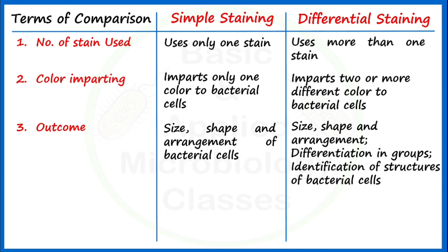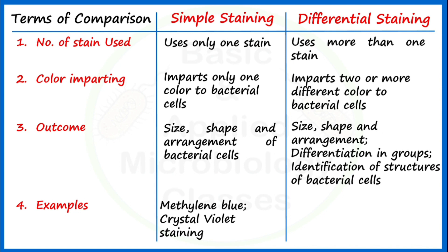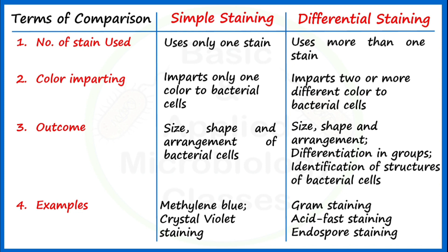Looking at examples: for simple staining, methylene blue and crystal violet-based staining are very good examples routinely performed in microbiology laboratories. For differential staining, gram staining and acid fast staining are prominent examples. Gram staining differentiates gram positive and gram negative bacteria. Acid fast staining differentiates between acid fast bacteria and non-acid fast bacteria, and a very good example of acid fast bacteria is Mycobacterium tuberculosis.